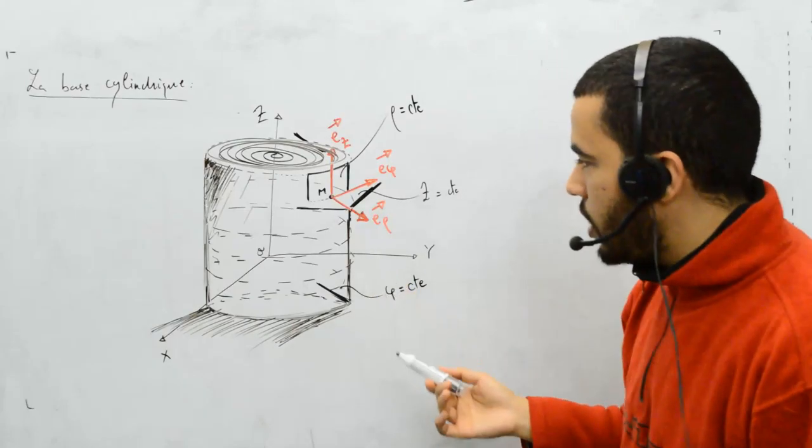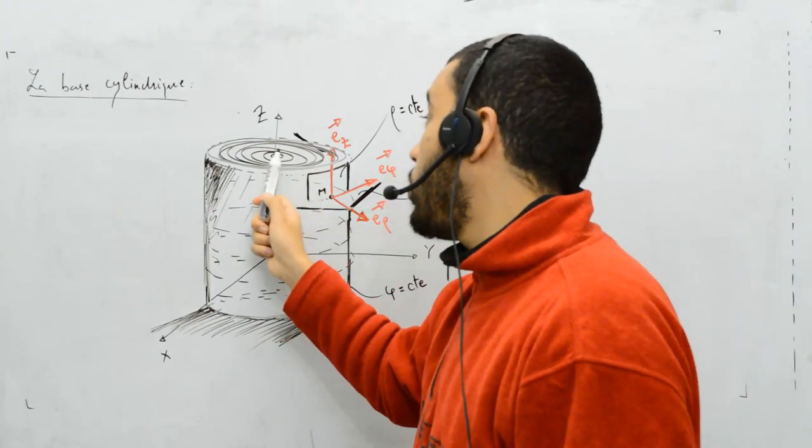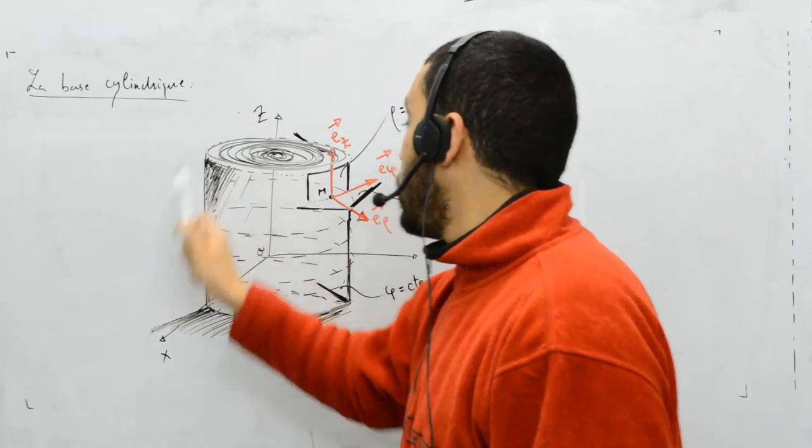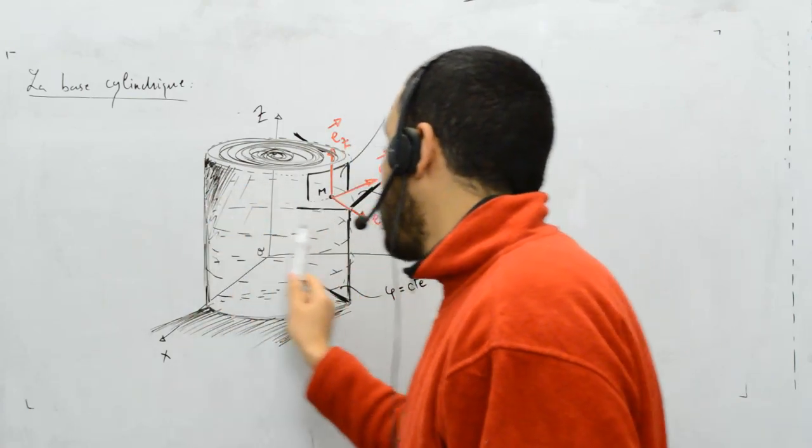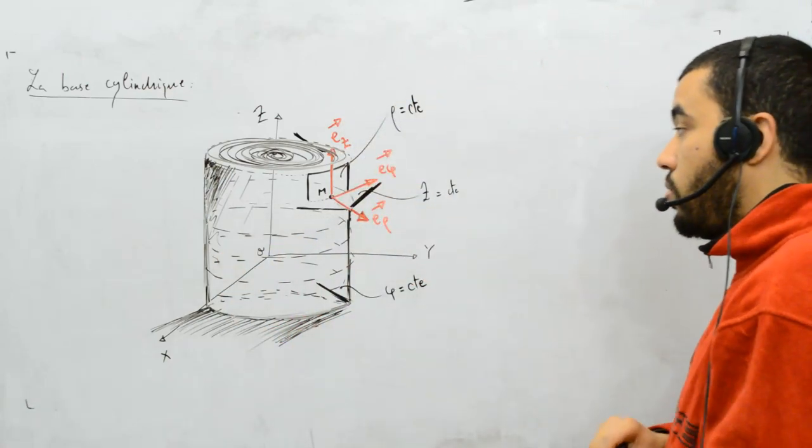Donc vous avez votre cylindre, et si vous avez de tels mouvements, par exemple ce mouvement-là, si vous avez ce mouvement, cet autre mouvement hélicoïdal, vous pouvez utiliser les coordonnées cylindriques.